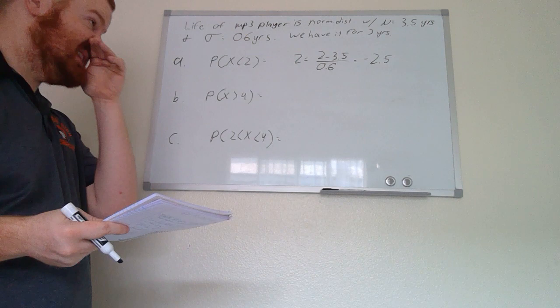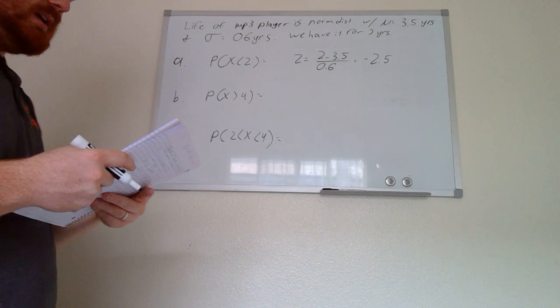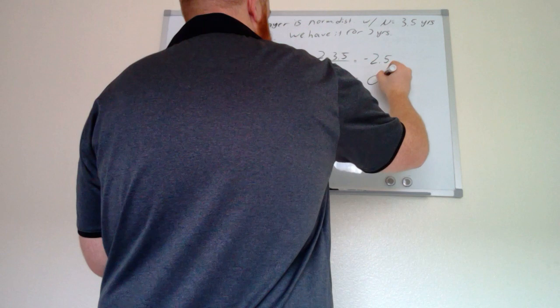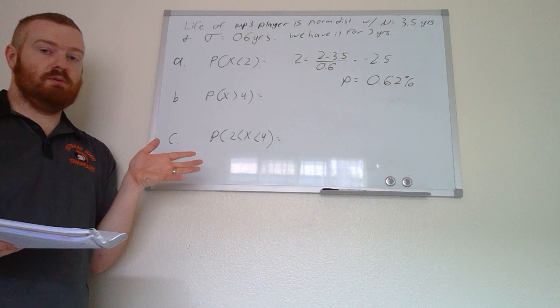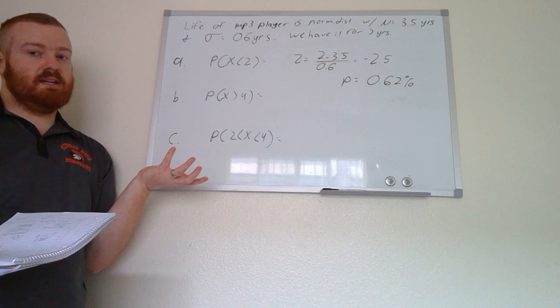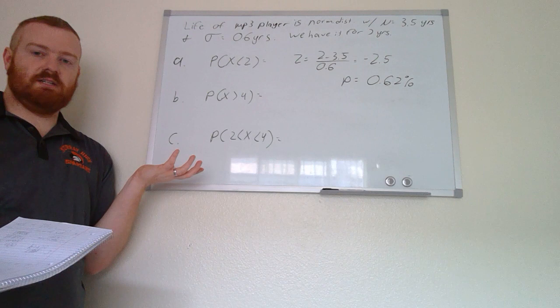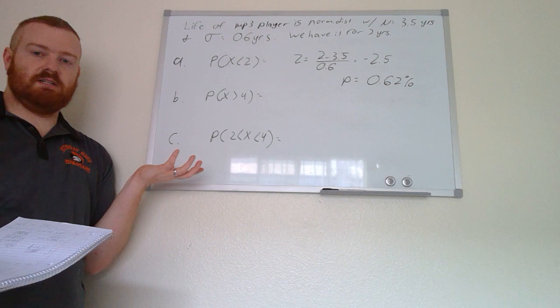Looking up z = −2.5 in the z-score table gives a probability of 0.0062, or 0.62%. There is a 0.62% chance the MP3 player lasts less than 2 years. Equivalently, if it died at the two-year mark, it would be in the 0.62nd percentile — only 0.62% of all MP3 players have a lifespan of that value or less.